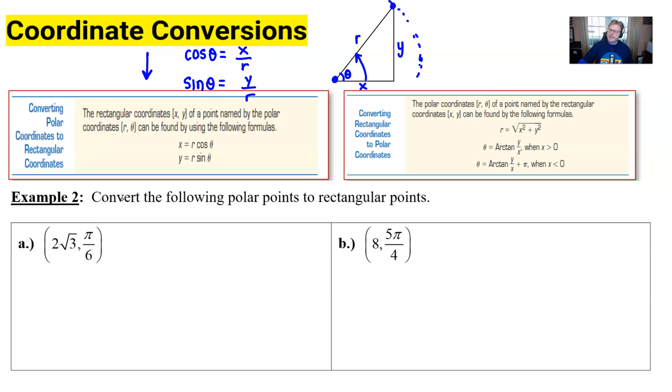Well you're going to first of all go ahead and set x equal to what we indicated r times the cosine. Well r in this problem is the 2√3 and we're going to multiply that by the cosine of the angle π/6.